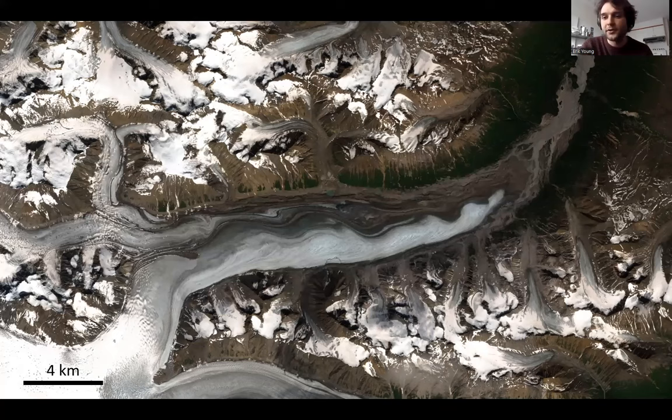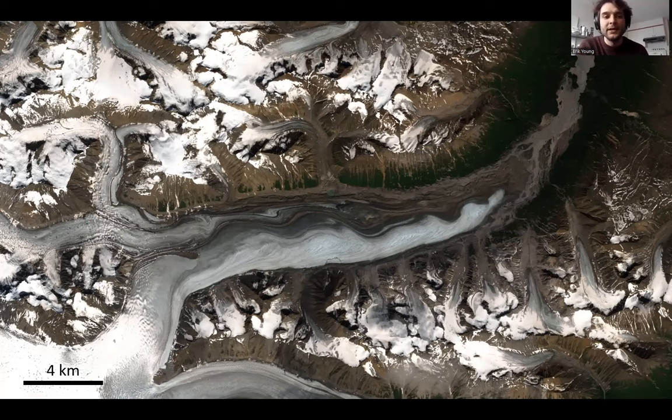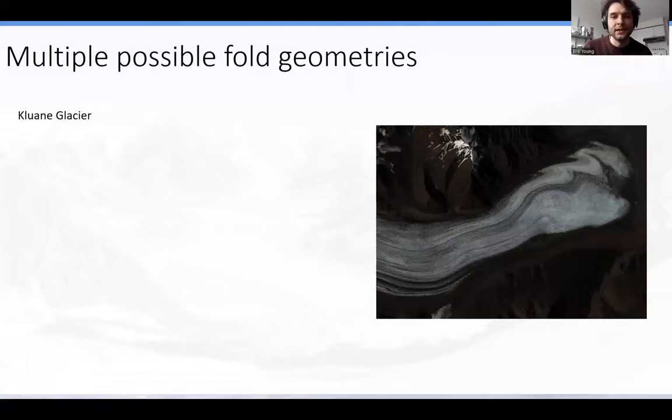Each of these folds is the product of a glacier surge — an episode of very brief but very vigorous mass discharge out of this northern tributary into the main trunk of the glacier. That deflected the pre-existing ice foliation and passively folded the ice into the folds you see here, which are further deformed as they're advected downstream. This valley-scale folding is really the type of structure I'll be referring to throughout the talk.